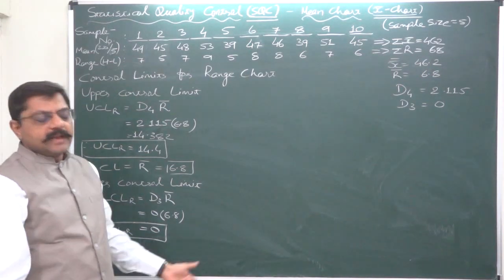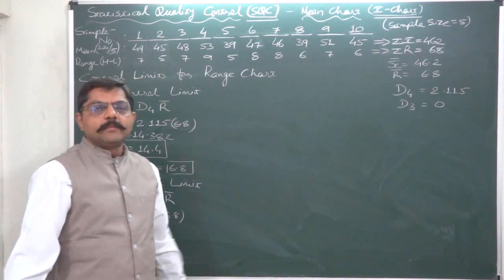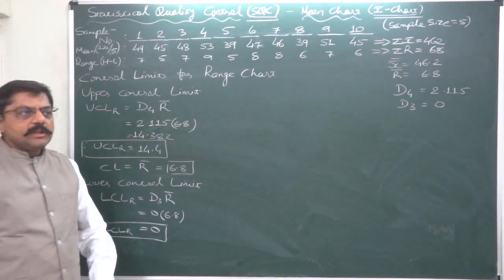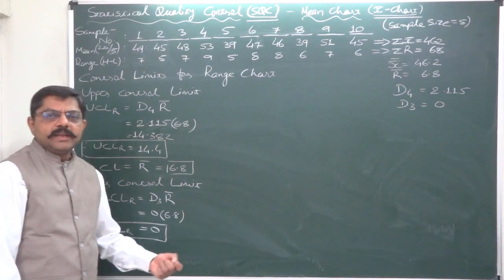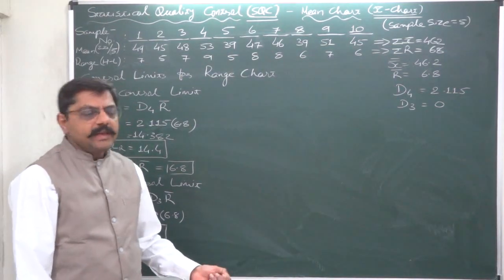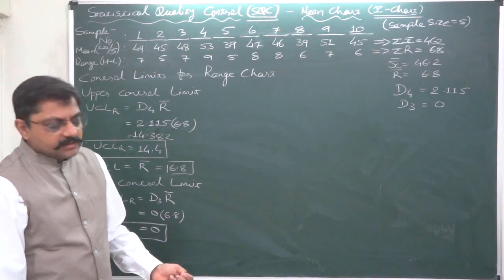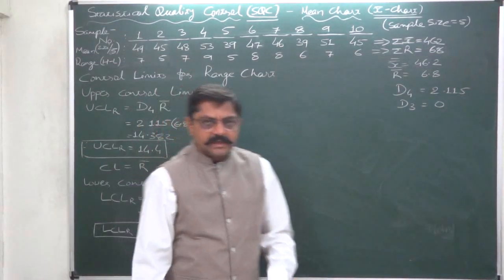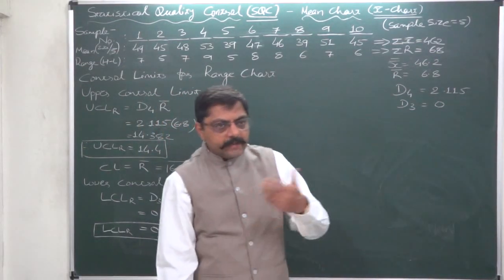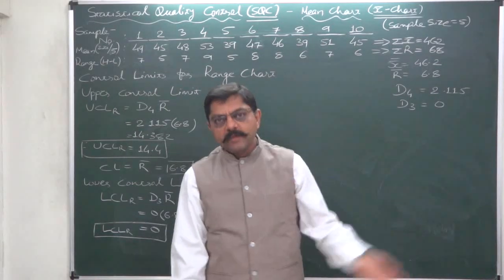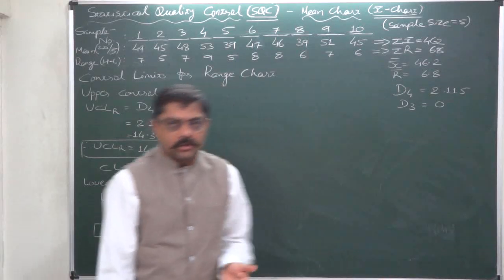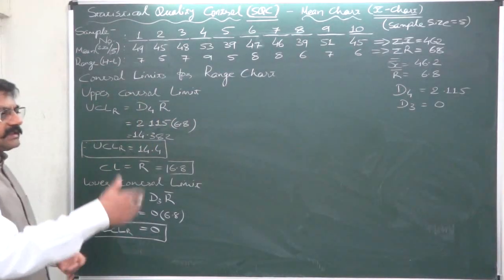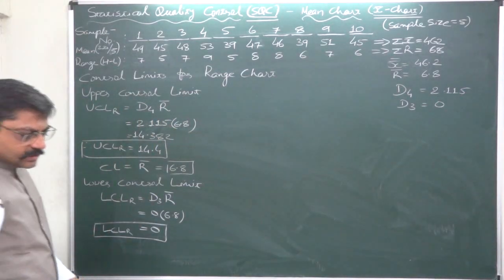Sometimes some paper setters may ask a question about drawing the conclusion without drawing a chart. In that case, just consider UCL and LCL and compare the sample points with these two. If any sample value is greater than UCL, then we can conclude that the process is out of control or process is not under control. Let's draw the control chart.